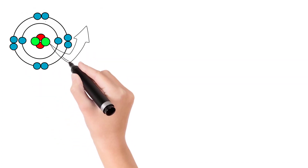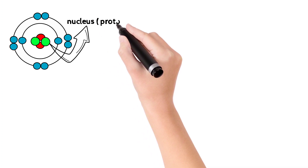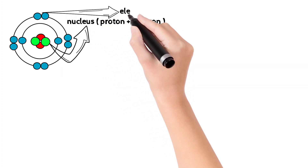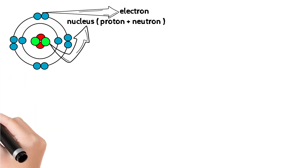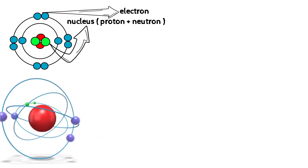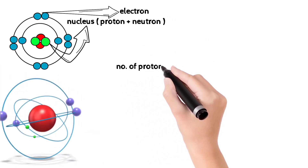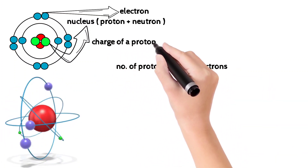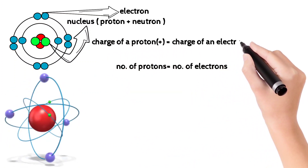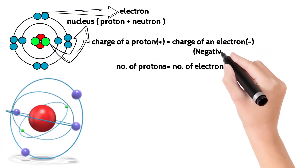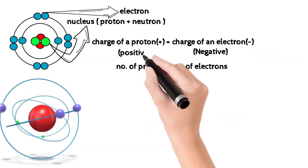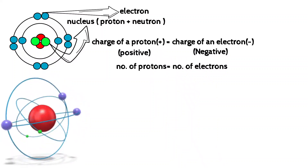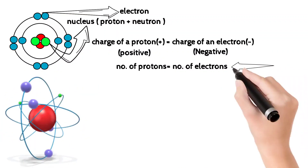At the center is the nucleus. The nucleus is nothing but protons and neutrons. Around the nucleus, electrons revolve in elliptical orbitals. One atom has an equal number of protons and electrons. Electrons carry a negative charge and protons carry a positive charge, while neutrons carry no charge.